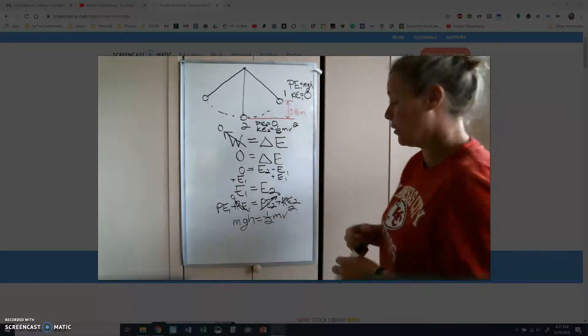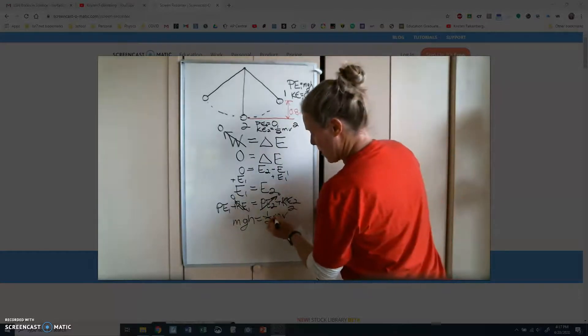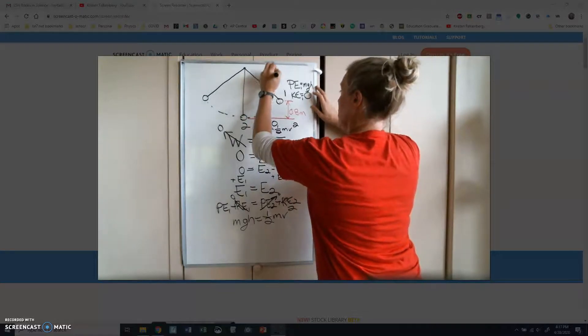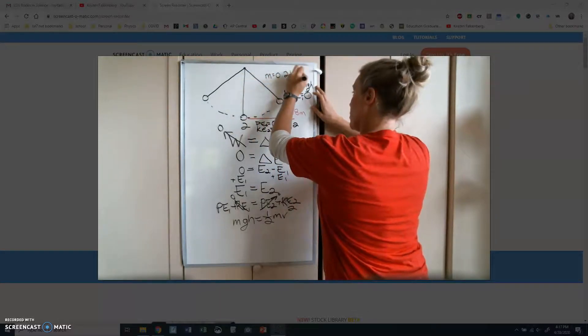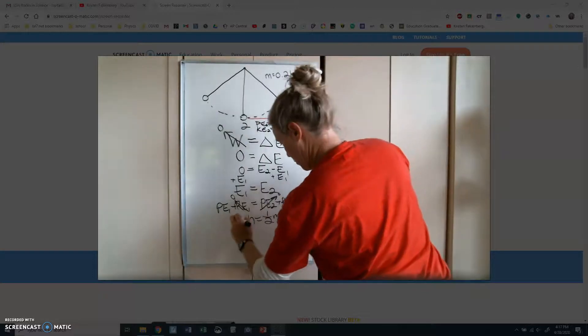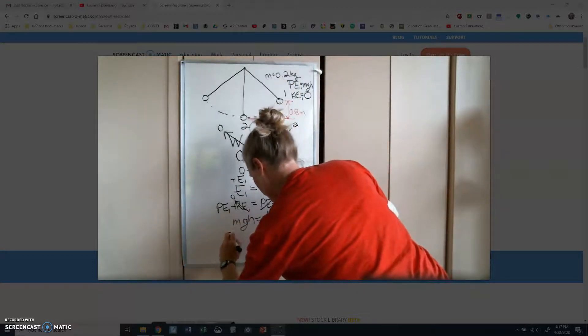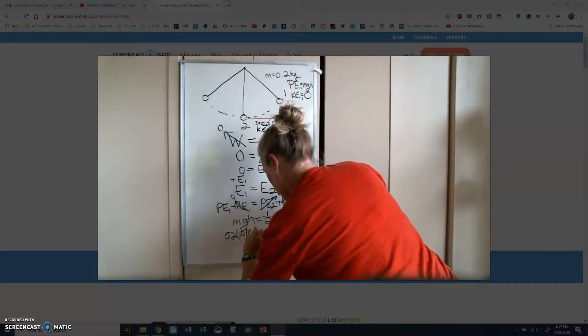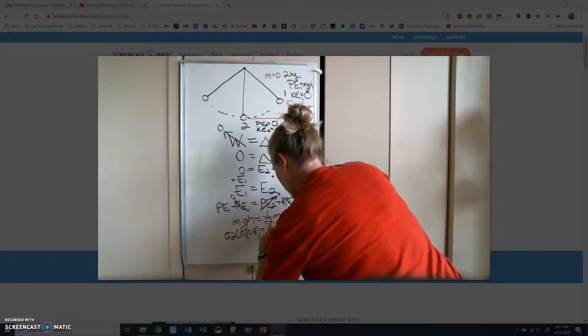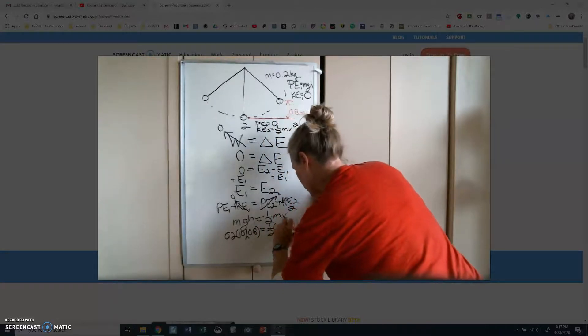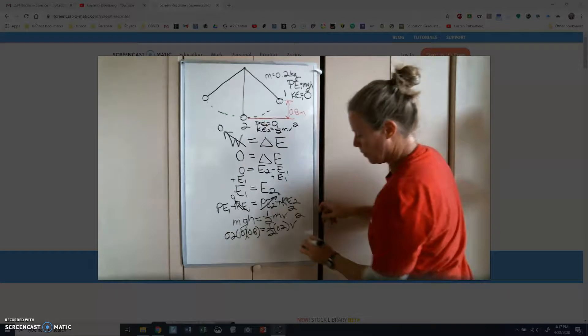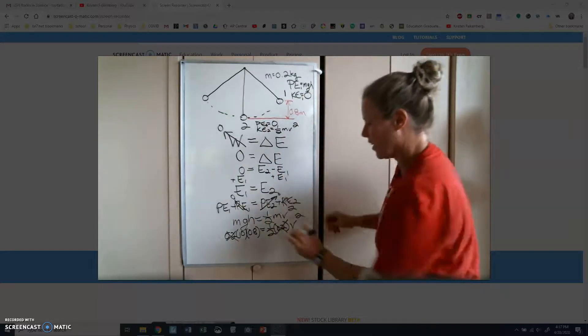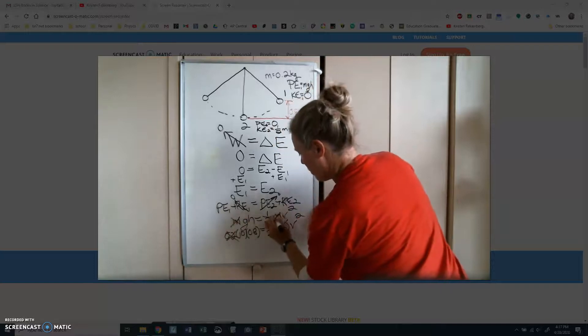So there's no kinetic energy at first. There's no potential energy at second. That is MGH equals 1/2 mv squared. Now, to me, the coolest part of this is the fact that mass is on each side. So this mass is equal to 0.2 kilograms. Well, the mass cancels out. I could have canceled it out right up here.